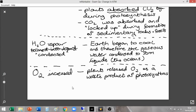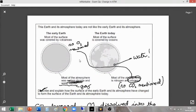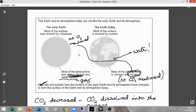So this was a six marker. We've described the changes, so we said CO2 decreased, water vapor condensed, and oxygen increased, so describe done. Explain, we've used scientific keywords like photosynthesis, locked up, sedimentary, condensed, absorbed, waste products. We've got some really cool scientific words and described the processes in which that actually happened, so the cooling and the photosynthesis being some of those processes. I think we've explained it too. Let's have a look at the mark scheme.